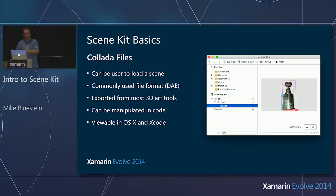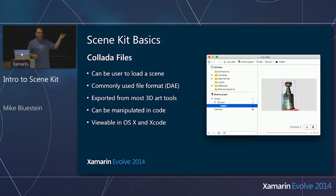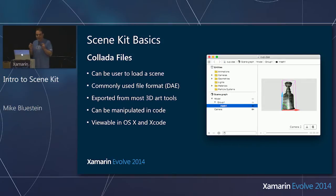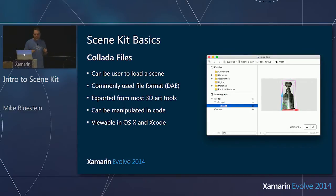You simply bring the asset into Xamarin Studio or Visual Studio. Likewise, the QuickLook preview in Finder on OS X lets you see the model and rotate it around. There's good support for viewing and making tiny tweaks to Collada files on the Mac — though it's not a full-blown modeling tool in any way.